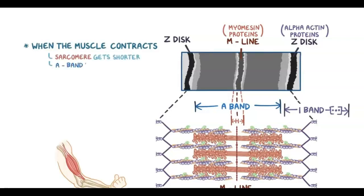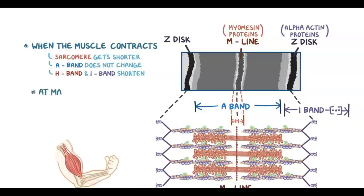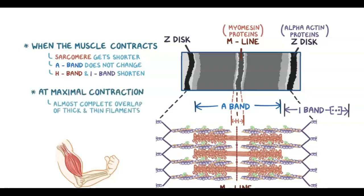Now, the A-band does not change, since it's the length of the thick filament. But the H-band and I-band shorten, because as the overlap increases, the regions that consist of only thick or thin filaments decrease. At maximal contraction, there's an almost complete overlap of thick and thin filaments, and the H-band and I-band are almost completely gone.